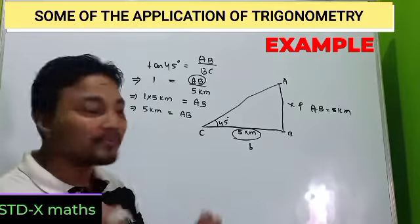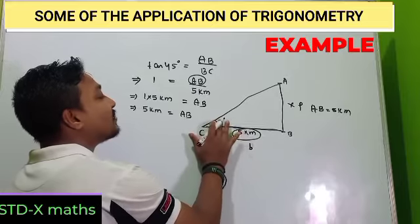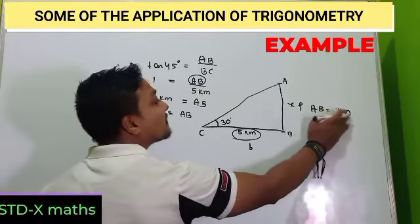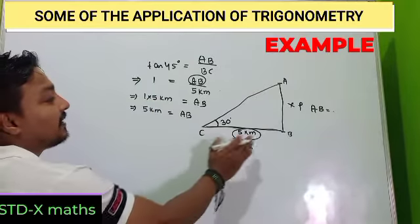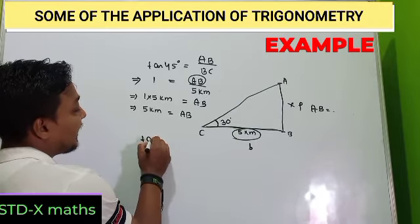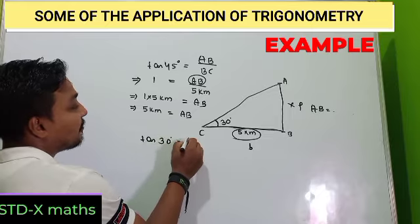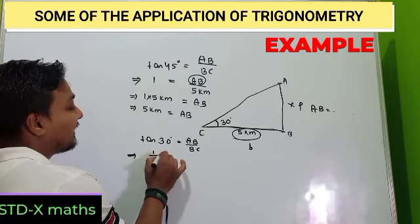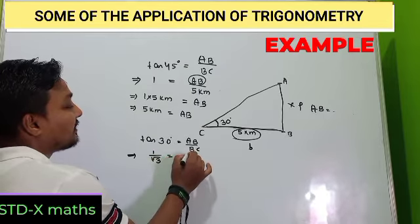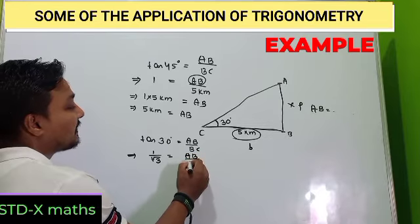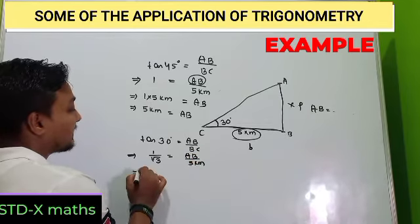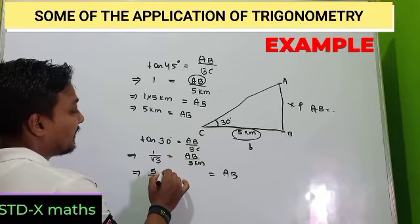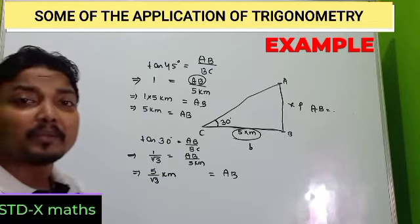So finally I got the height of the mountain: it is 5 km. Easy! Now suppose instead of 45°, it is given as 30°. How to find the same? Tan 30° = AB/BC = (1/√3), so AB = 5/√3 km.